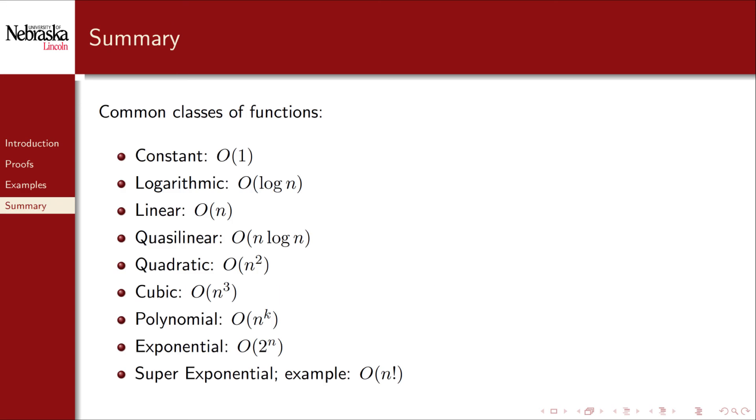Here are some of the most common classes of functions that arise from algorithm analysis. An algorithm that doesn't depend on the input size runs in constant time or big O of 1. We have logarithmic algorithms such as binary search, linear algorithms of which we've seen a few examples. Quasi-linear algorithms are nearly linear except for a logarithmic factor. Many divide and conquer style algorithms including merge sort and quick sort fall into this category. Quadratic and cubic algorithms are also common, but are already inefficient for most practical input sizes. Both are generally polynomial. There are also exponential algorithms as well as super exponential algorithms, which are not practical for even small input sizes.